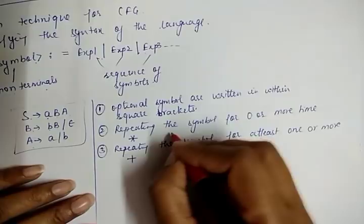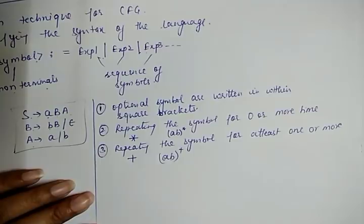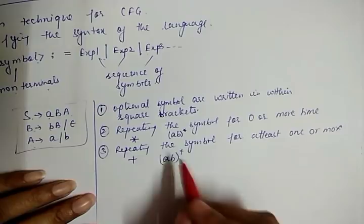For example, if we have A, B asterisk, we can put any number including 0. If we write A, B plus, it means the string can be encountered any number of times excluding 0.